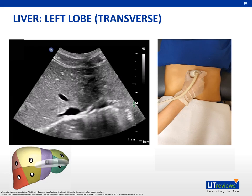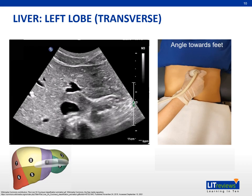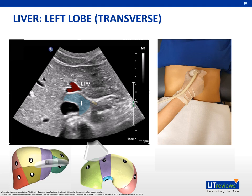As we angle the transducer caudally, the hepatic veins disappear from view while the left portal vein comes into view. With this landmark, we are looking at segments 3 and 2 laterally, and segments 4a and 4b medially. We again see the caudate lobe separated from the left lobe by the ligamentum venosum, with the IVC forming its right border. Because the left portal vein is at a more superior level than the right portal vein, we do not see the right portal vein in this plane. We can still see parts of the middle and right hepatic veins, which separate segment 8 from 4b and segment 7 from 8 respectively.